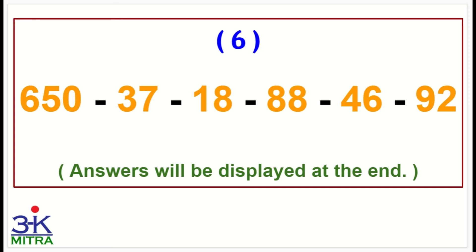Now moving to the seventh sum. 650 again, then minus 75, minus 29, minus 63, minus 84, minus 36. That is, write down the answer.